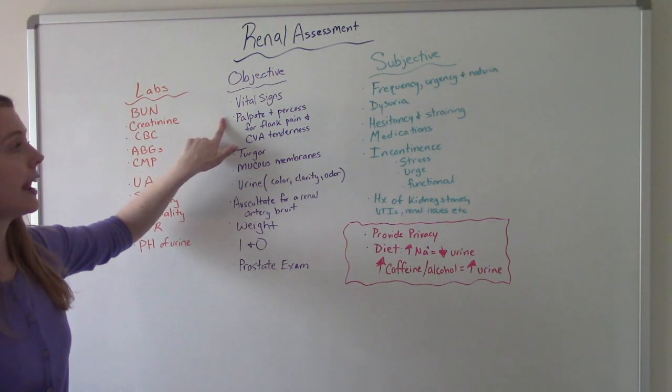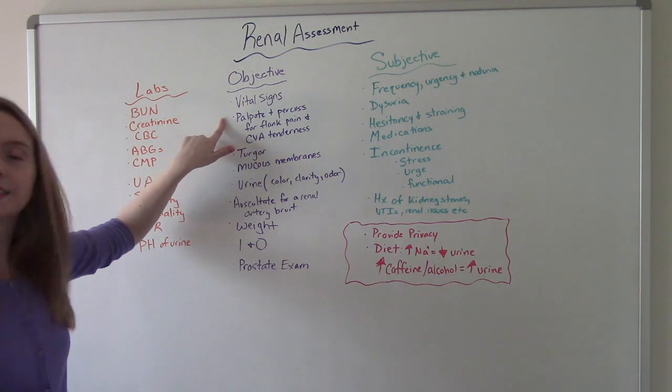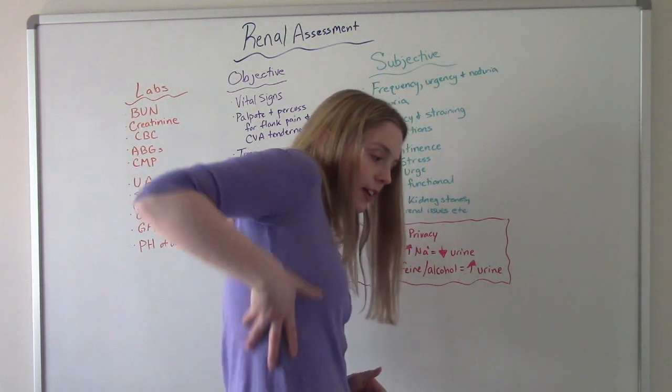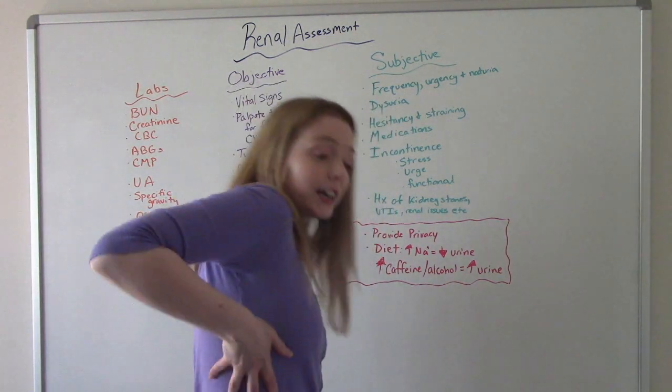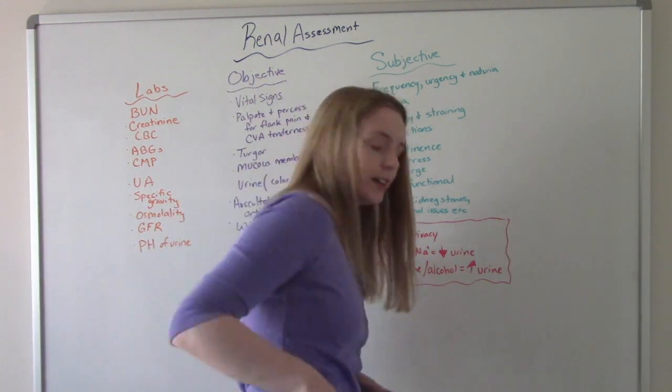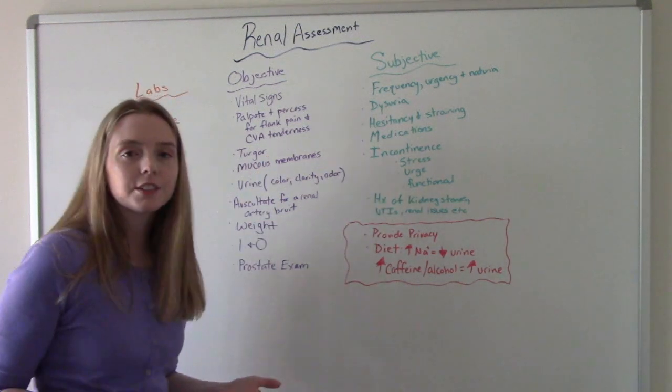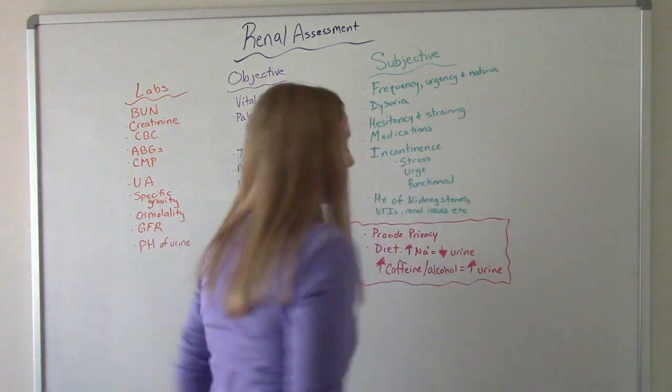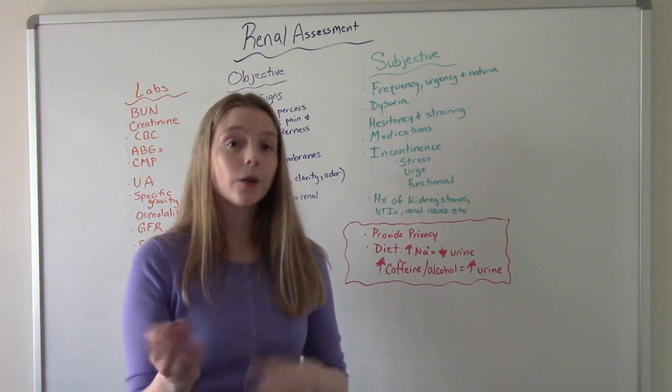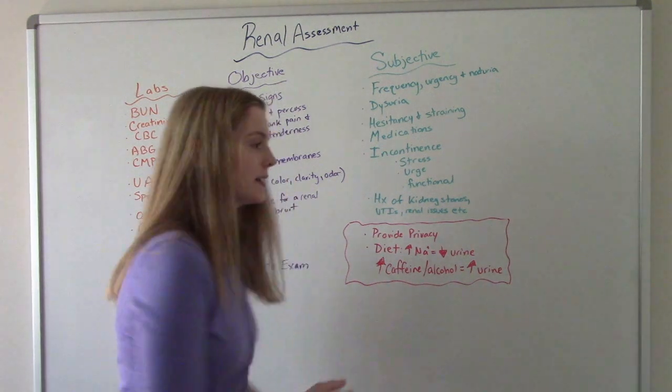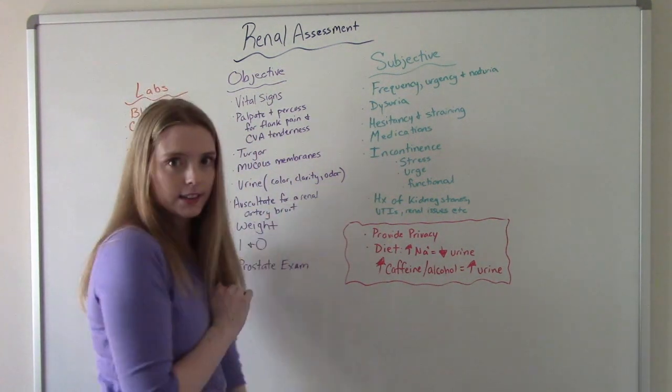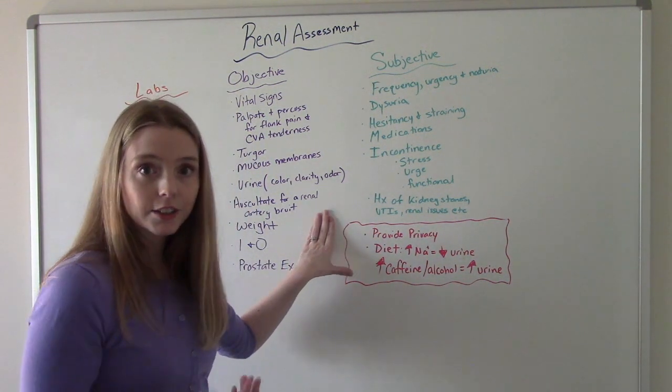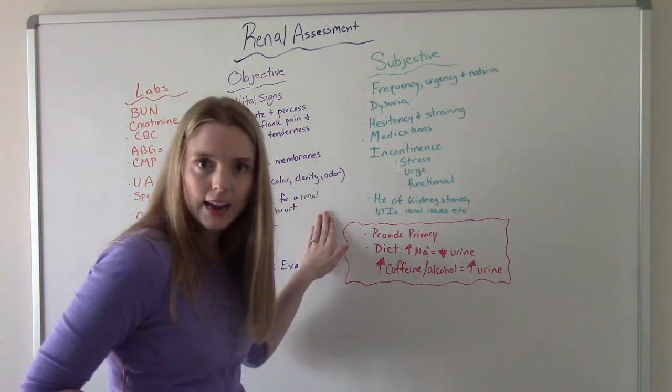We're going to palpate and or percuss for flank pain and CVA tenderness. So your flank is like the side of your body. So asking if they have flank pain or touching them and seeing if they react to it. And then percussing for CVA tenderness. You're going to go to the back. You're going to go to the 12th rib of the back on your patient, and you're going to percuss either directly or indirectly. Direct percussion is like this, tapping directly onto the body. Indirect percussion would be you put your hand or your finger in the way, and then tap on the body.